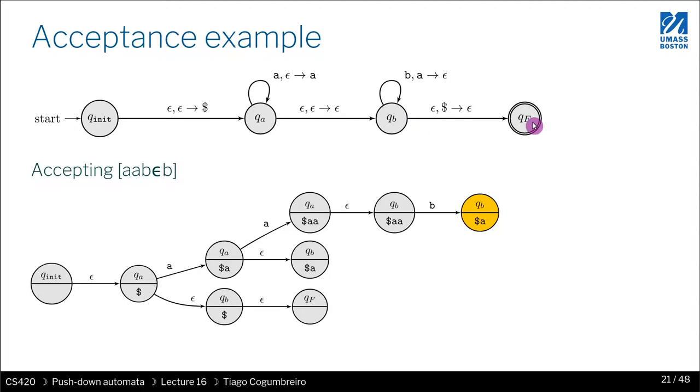Now I'm on QB. Are there epsilons? Oh yes, there's this one. But this one requires me to have a dollar sign on top, which I don't have. So there are no epsilons. Let's see, what we have next is B's. So since there are no epsilons, I can only go to self. So I have this one.